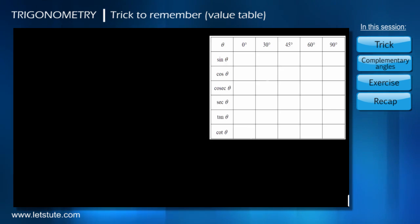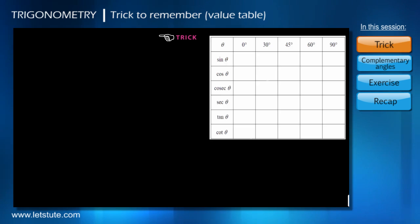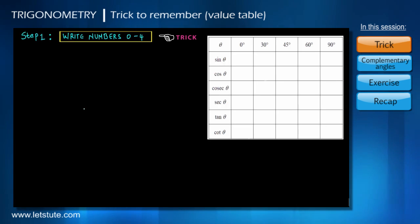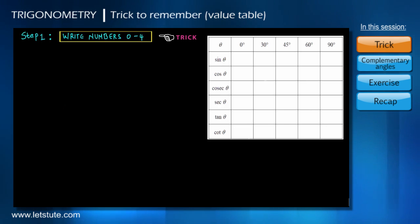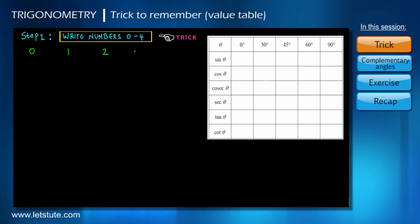Let's understand the trick step by step. First, write down numbers from 0 to 4, that is 0, 1, 2, 3, 4.